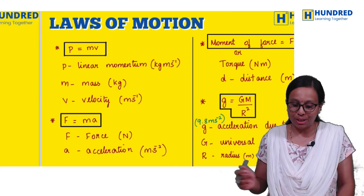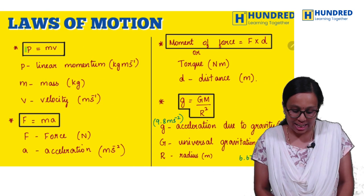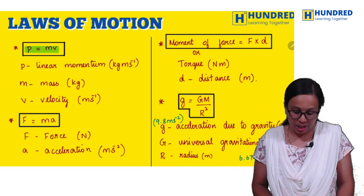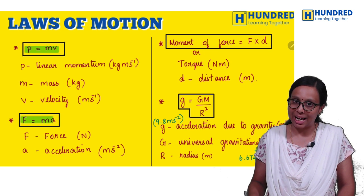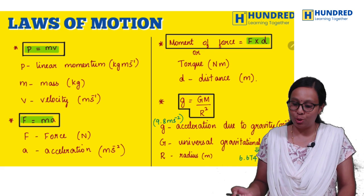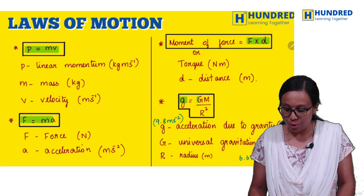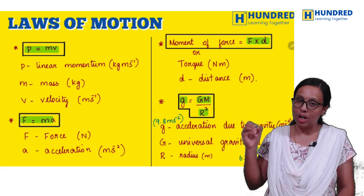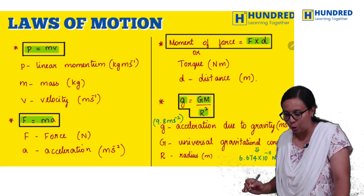So first chapter, laws of motion. Linear momentum p equals mv. Force equals mass into acceleration. Momentum force equals f into d. And then g equals GM by r squared.